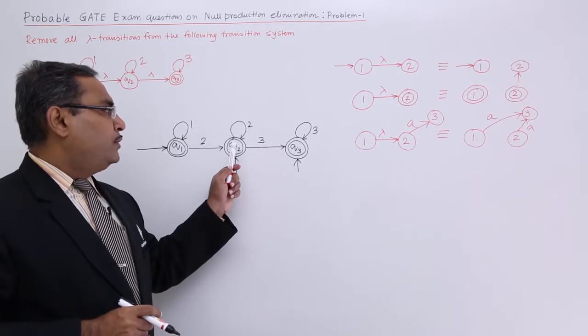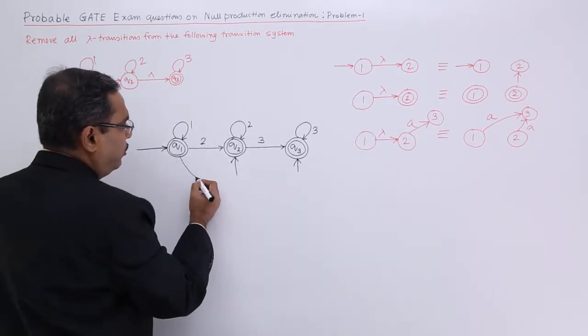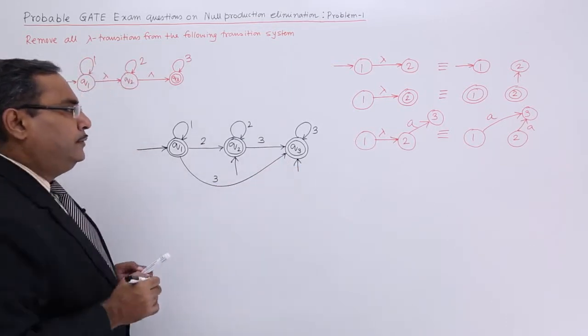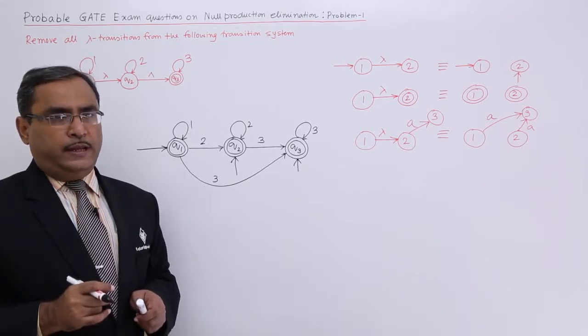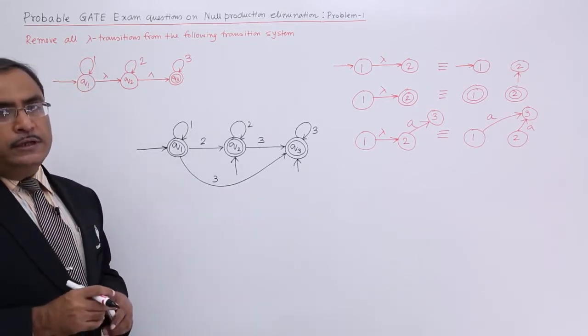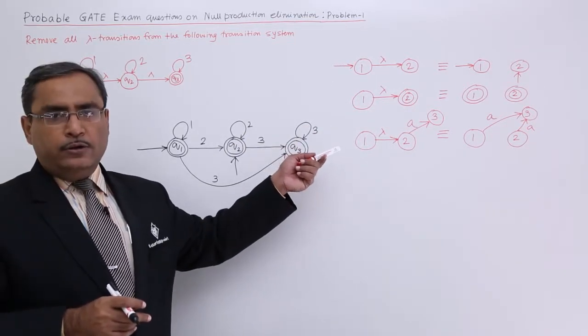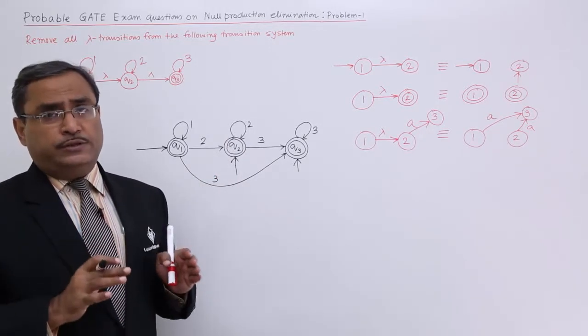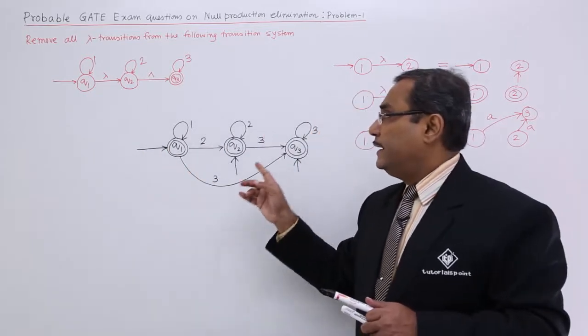But, another edge has been drawn. So, that is from Q2 to Q3 with the level 3. So, that is why I should also draw another edge from this to this with the level 3 and that is the completion of my explanation. So, in this way the lambda transition can be eliminated applying these rules and these rules can be applied in any order. But, ultimately you should reach your final solution. I think you are getting the logic how the things are taking shape.